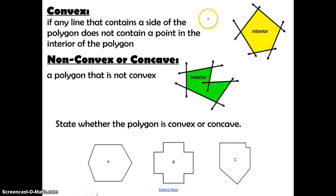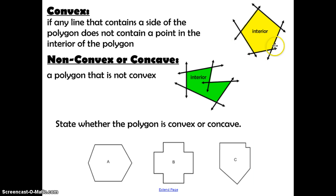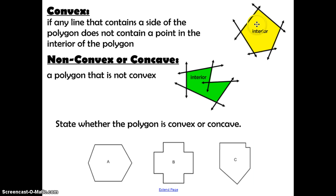A polygon is called convex if any line that contains a side of the polygon does not contain a point in the interior of the polygon. When I extend all the sides of the polygon, you can see that none of those lines are going to cross and intersect the inside of the polygon. So this is called convex.